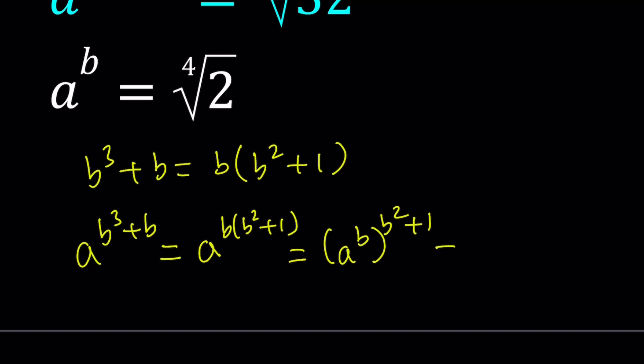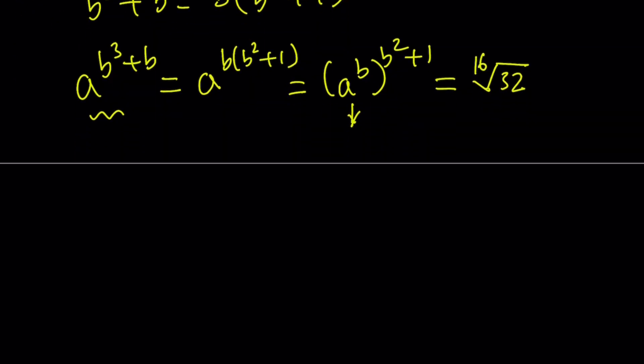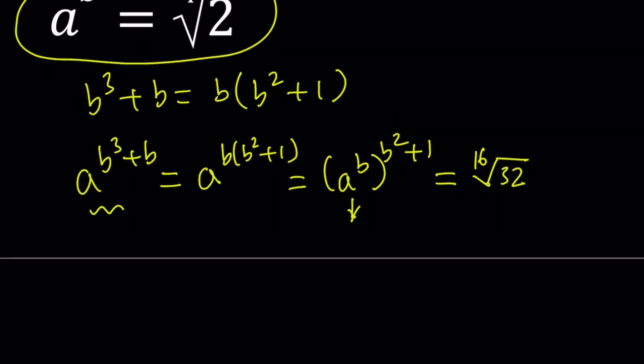And we know that this expression is equal to the 16th root of 32 because it's given in the problem. But we also know that a to the power b is equal to the 4th root of 2. So we can go ahead and replace a to the power b with that. Let's go ahead and replace a to the power b with the 4th root of 2, raise it to the power b squared plus 1, and then set it equal to the 16th root of 32.